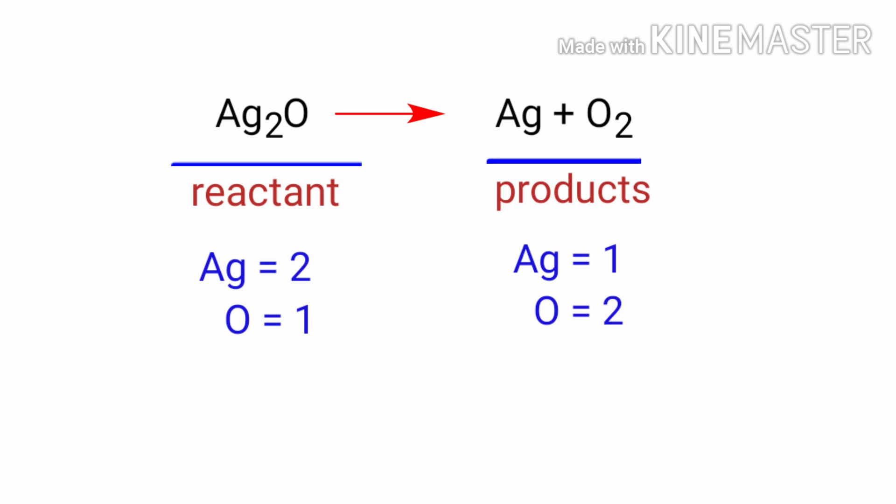The number of atoms are not balanced on both sides. To balance the chemical equation, we need to make use of coefficients. A coefficient is a number that we place in front of a chemical formula.